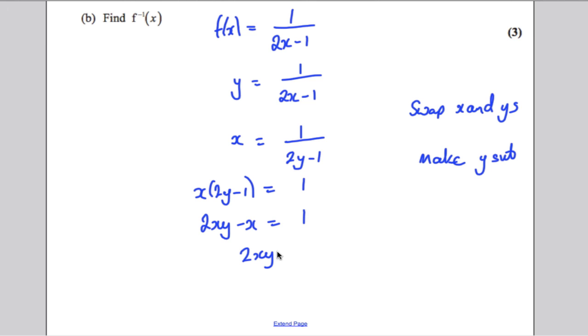Divide both sides by 2x. Y equals (1+x) over 2x. Write it in f⁻¹ form. Therefore, f⁻¹(x) equals (1+x) over 2x. And you're done.